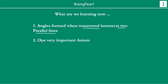Today we are going to see a very important axiom. Basically, Euclid used the word axiom and postulate. Axiom means assumptions which are specific to overall mathematics, while postulate means assumptions which are very specific to geometry. So we are going to talk about if you have two parallel lines and a transversal, what are the different angles that are formed, and then we will discuss one very important axiom regarding parallel lines and transversals. So let us get started.